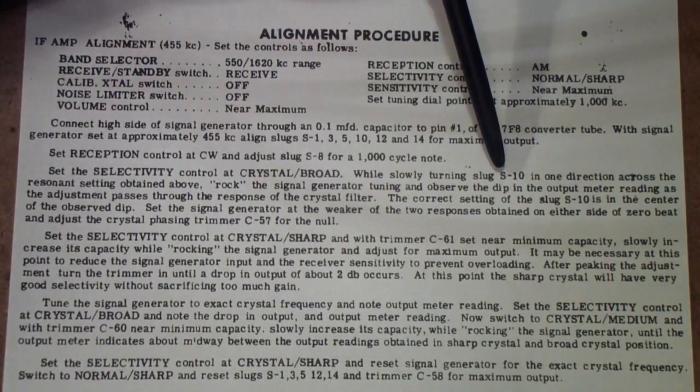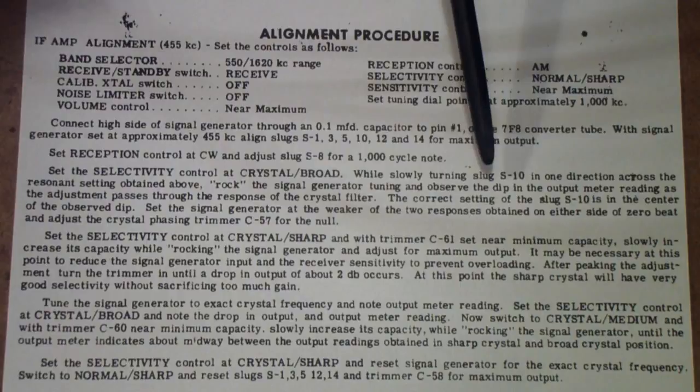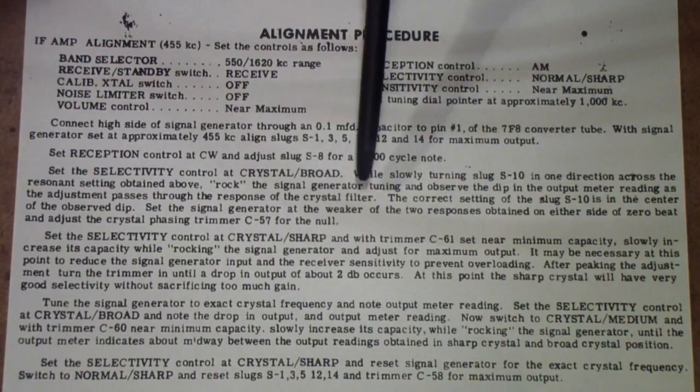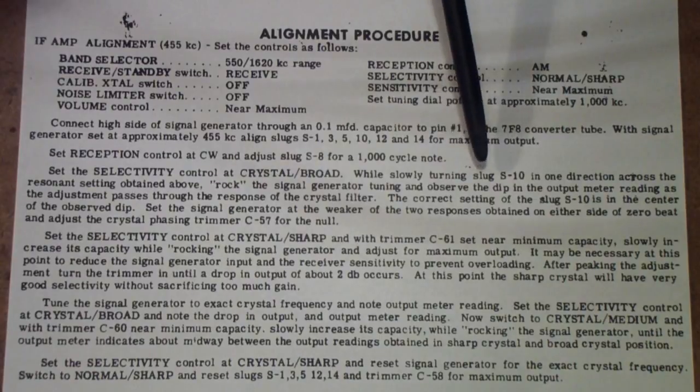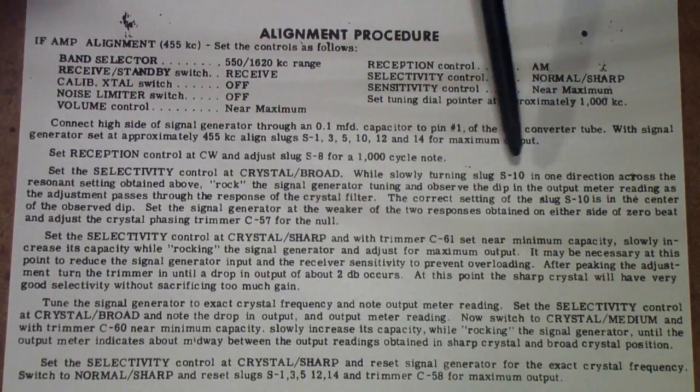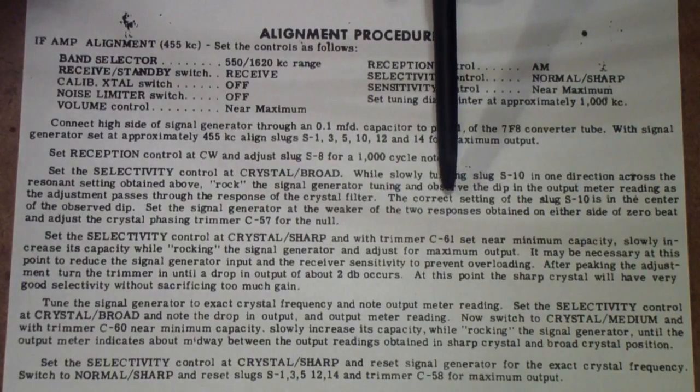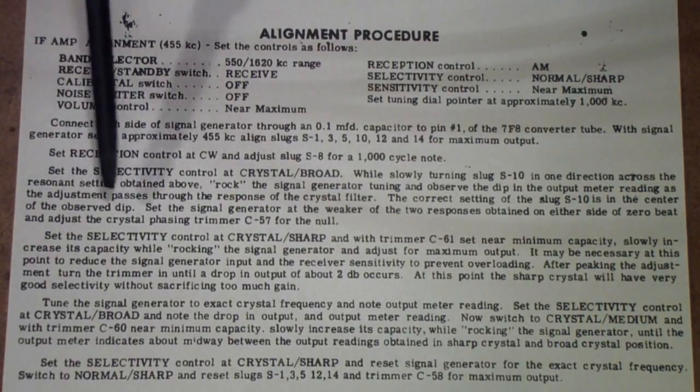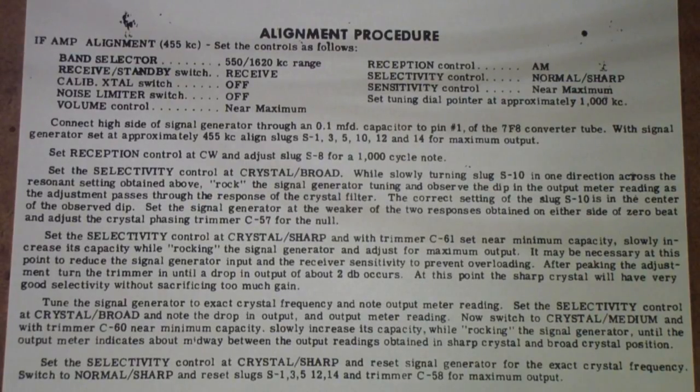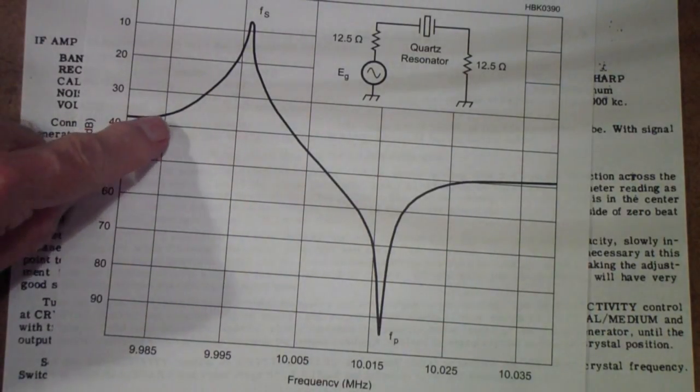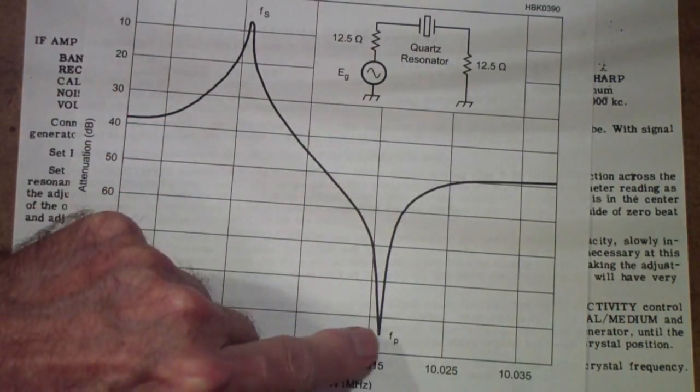watching the response of the circuit as you adjust slug S10 and you begin below the frequency in this case it's a 455 kilohertz crystal so you start below 455 and you sweep the generator gently up and adjust S10 then you come down you go back up again and adjust S10 again and so on as it said as it says the correct setting of the slug S10 is in the center of the dip you observed now the dip that you are seeing is this dip